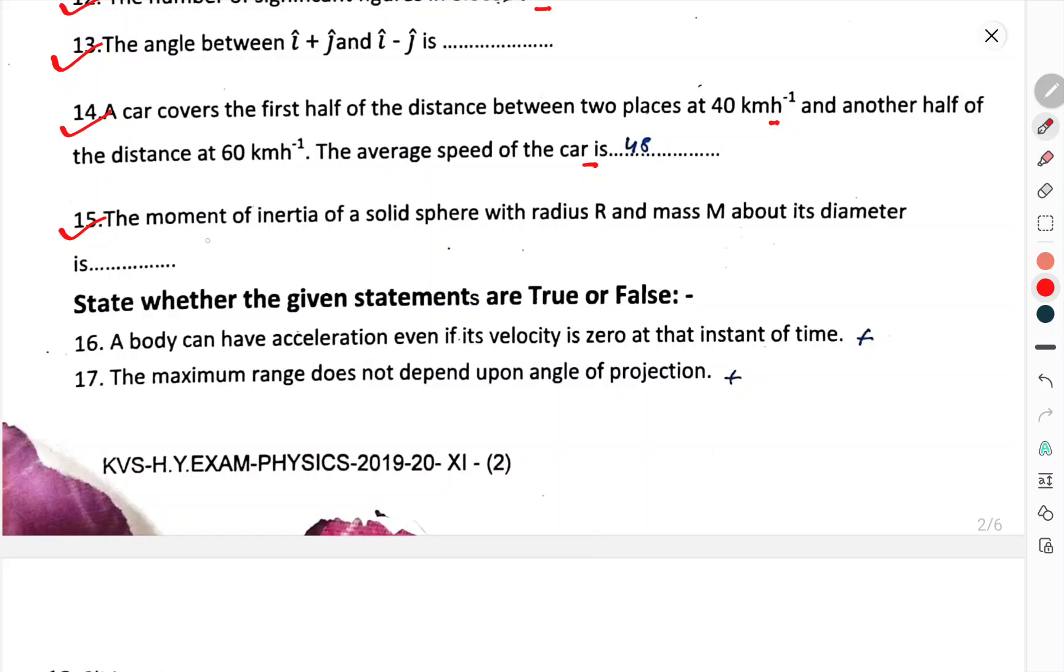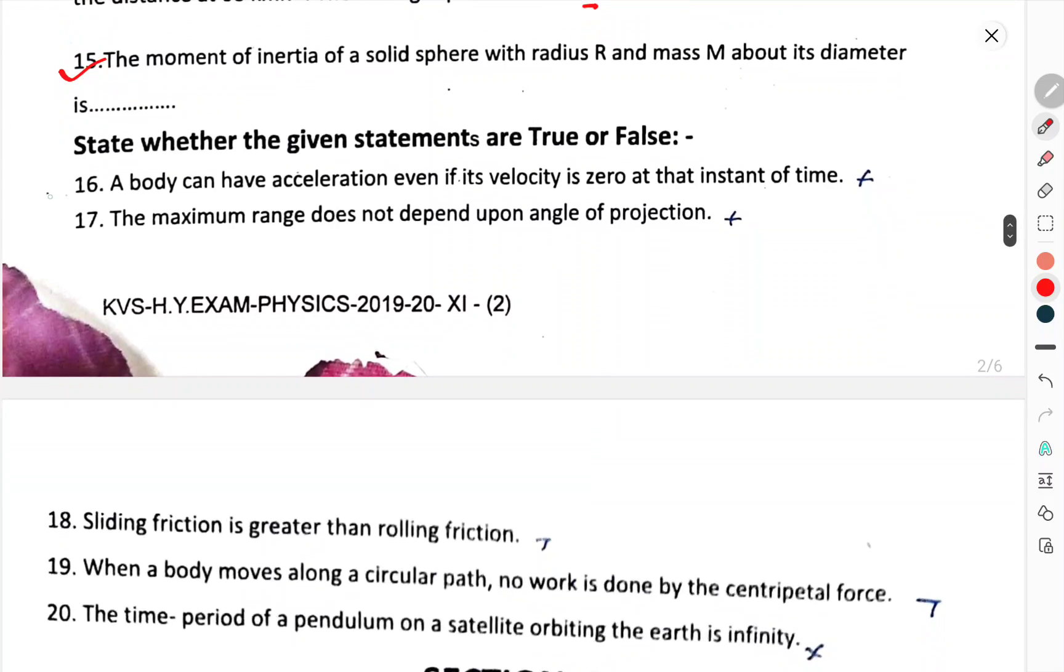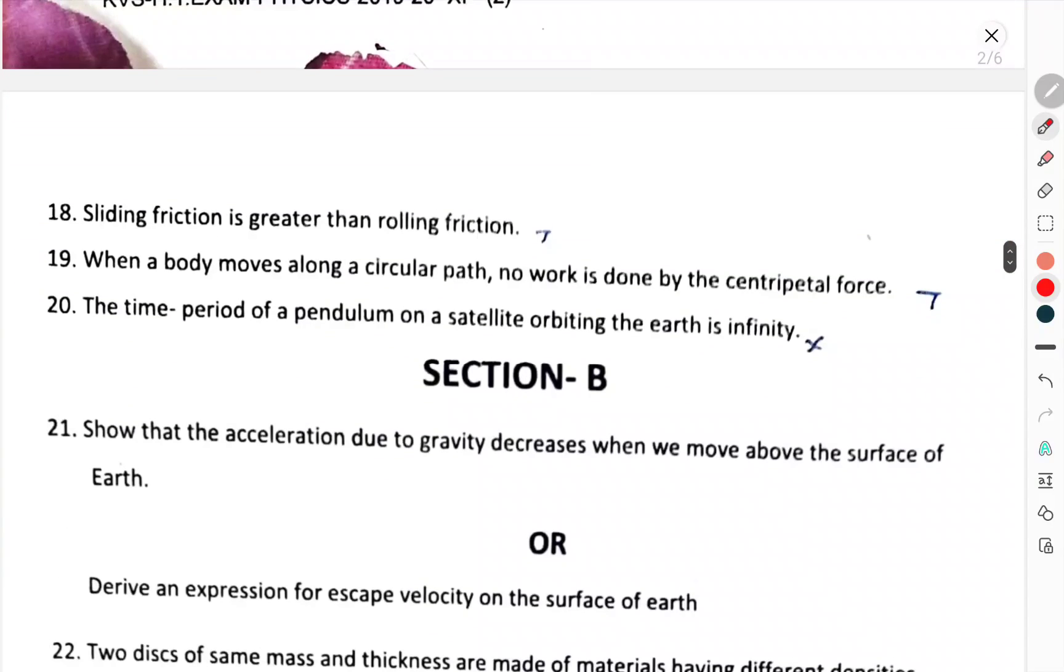Question number 14. A car covers first half of the distance between two places at 40 km per hour and another half distance at 60 km per hour. The average speed of the car is. Question number 15. The moment of inertia of a solid sphere of radius r and mass m about the diameter is. State whether the given statement is true or false.